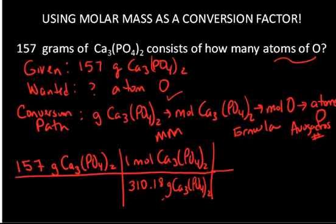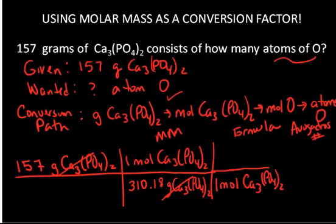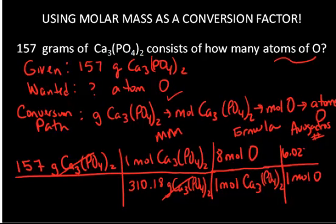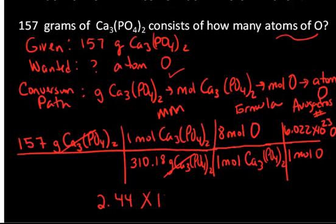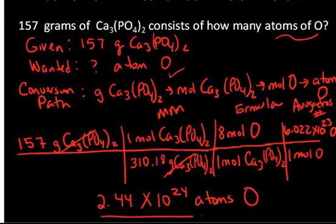Now in units of moles of calcium phosphate, I apply formula stoichiometry: for every 1 mole of calcium phosphate, there are 2 phosphates, which means 8 moles of oxygen. Then using Avogadro's number, for every 1 mole of oxygen I have 6.022 × 10²³ oxygen atoms. Putting all of that into the calculator, I end up with an answer of 2.44 × 10²⁴ atoms of oxygen in just 157 grams of that mineral.